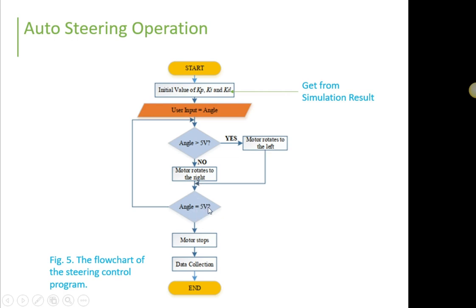If the angle is equivalent to 5V, meaning that the motor will stop because this is the input by user that requires the system to stop from turning or from driving.